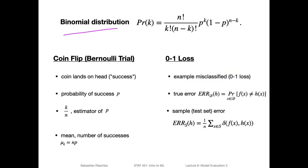The binomial distribution is actually a probability mass function, because it is a discrete distribution. You can think of it as the number of successes from n trials. The most famous — or most boring — example is coin flips. We can define the coin landing on heads as a success and landing on tails as a failure. For an unbiased coin, the probability of success would be 50%. In practice, you could flip the coin 1000 times and then estimate the probability from that.